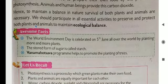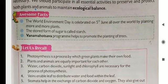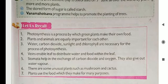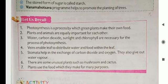Kuch facts diye huye hain — jaise World Environment Day kab hota hai? Fifth June ko hota hai. Yeh aapke knowledge ke liye hai. Iske baad aapko hum exercise karvaayenge. Aaj ke liye itna hi. Thank you.